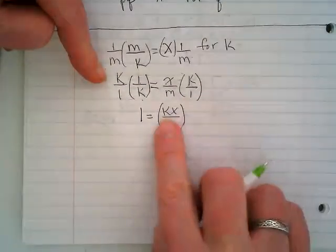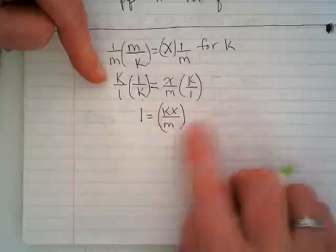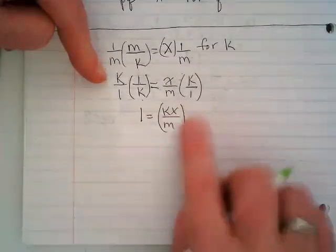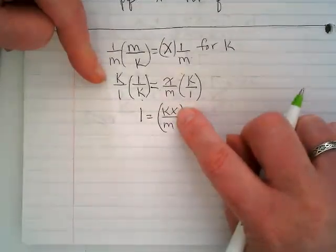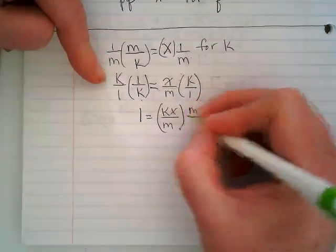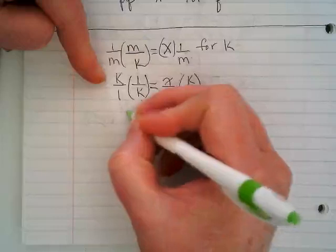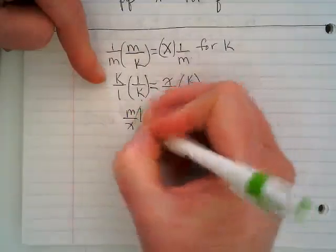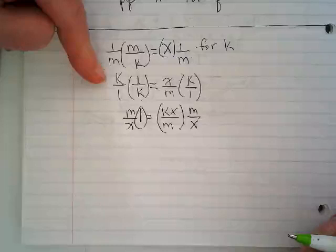I really want the k by itself but right now it's caught up in this mess on the other side of the equation. If I multiply by this reciprocal, now I'm going to get it by itself.